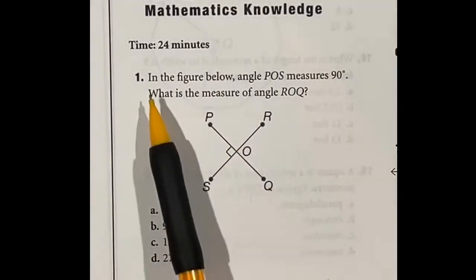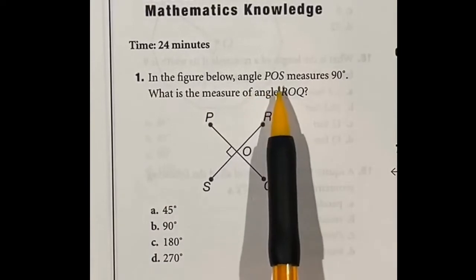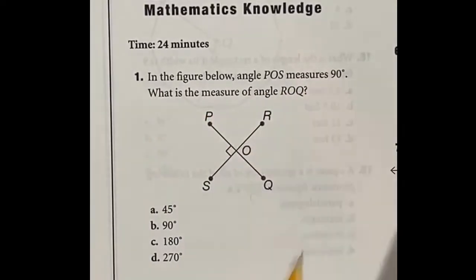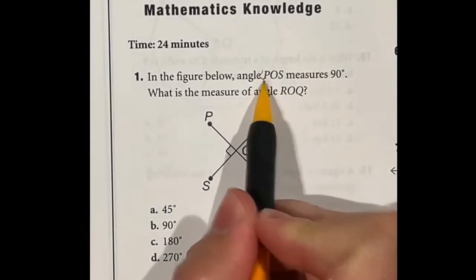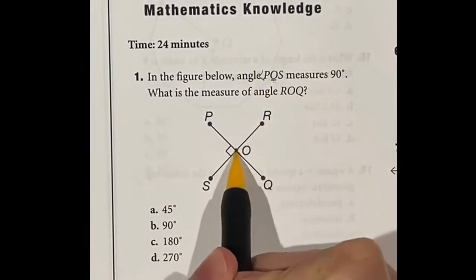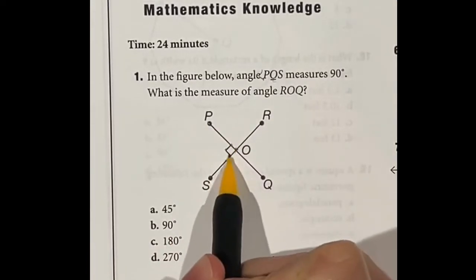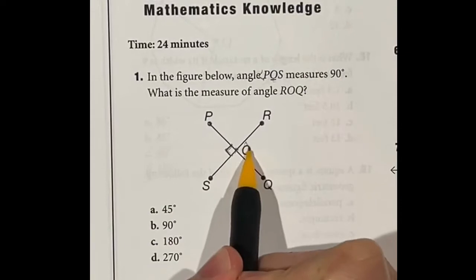Let's go ahead and knock out number one first. It says here, in the figure below, angle POS measures 90%. What is the measure of angle ROQ? Well, POS - if you didn't know for an angle, the middle is always the vertex of that angle. So in this case, they're talking about POS, so this angle right here is 90 degrees. And they want to know, what is this angle here?